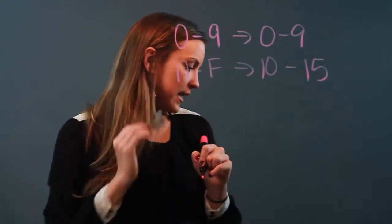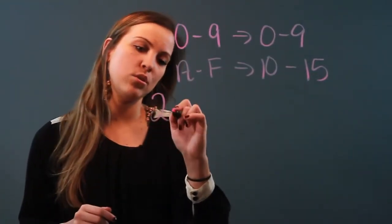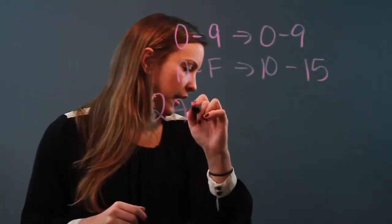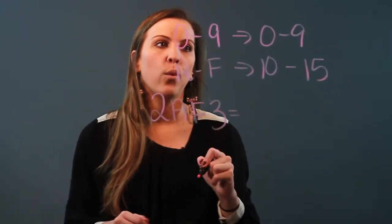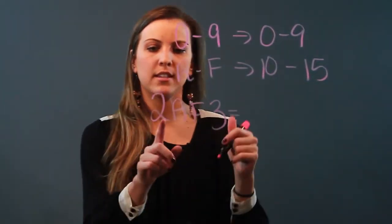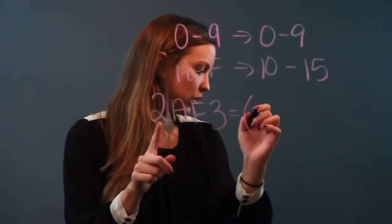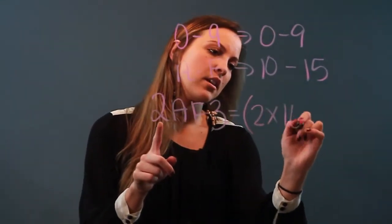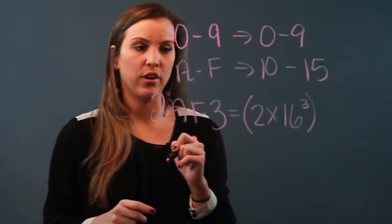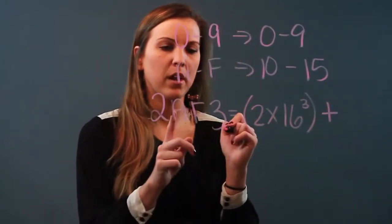So if for example I wanted to translate 2AF3, what I would do is remember my places and 2 is going to translate into 2 times 16 to the third, and then I'm adding each one just like binary numbers.